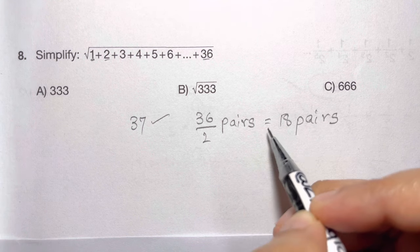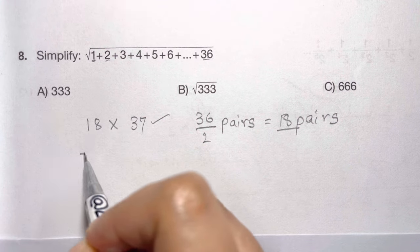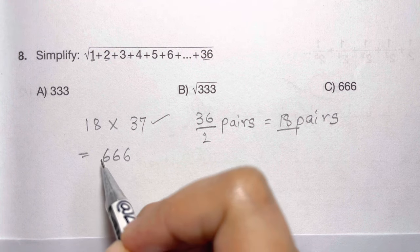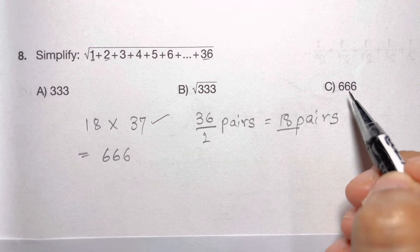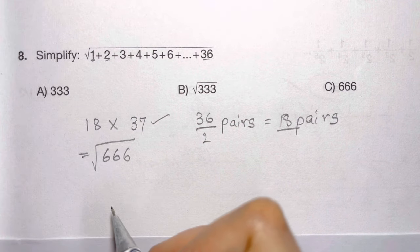So let's multiply 18 pairs with 37. 18 times 37, and that gives you 666. So you might be thinking that's our answer - no, because this is under the square root, so you have to put square root of 666.